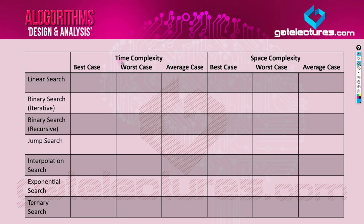We have seen many different searching algorithms. There are two categories: searching algorithms and sorting algorithms. The most popular searching algorithms that 99% of students study are linear search and binary search. Students generally skip jump search, interpolation search, exponential search, and ternary search — some don't even know these exist. In this series of videos, we are going to cover all the searching algorithms, including linear search and binary search, from the very basics.